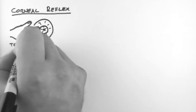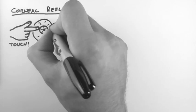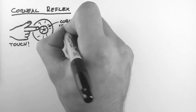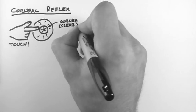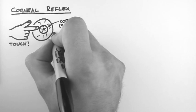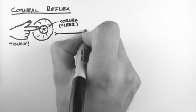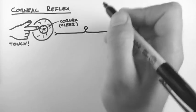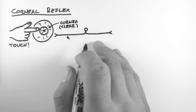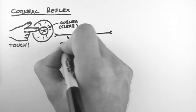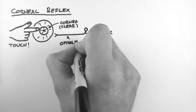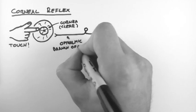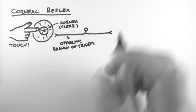A stimulus, which is usually a touch, is applied to the cornea of the eye. And this is the cornea here. It's the clear bit of the eye. Now there are sensory nerves in the cornea that pick up this touch. These nerves are the nasociliary branch of the ophthalmic branch of the trigeminal nerve.